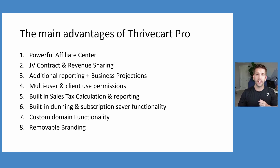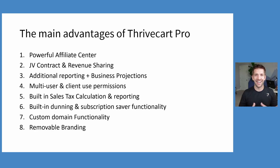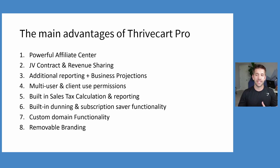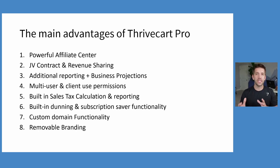So feature number one is the affiliate center. Feature two, JV contracts and revenue sharing. Number three, additional reporting and business projections — I came from corporate America doing projections and supply chain analysis, so this is near and dear to my heart. Number four, multi-user and client permissions. Five, built-in sales tax calculations. Six, dunning and subscription, custom domain functionality, and removable branding. You can skip ahead — I'll have timestamps down below for all the content in case you just want to figure out one particular feature. I want you to get the information you need to make an educated decision.